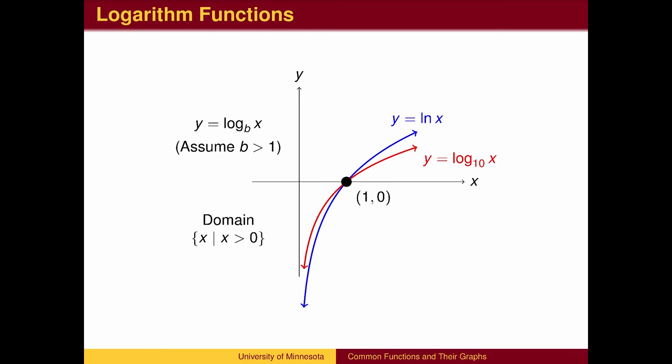Logarithm functions are the inverses of exponential functions. They all have a domain which is strictly positive and pass through the point (1, 0). They all approach the y-axis asymptotically downward. The larger the base, the longer the bottom of the graph stays close to the y-axis, and the shallower the graph is to the right.